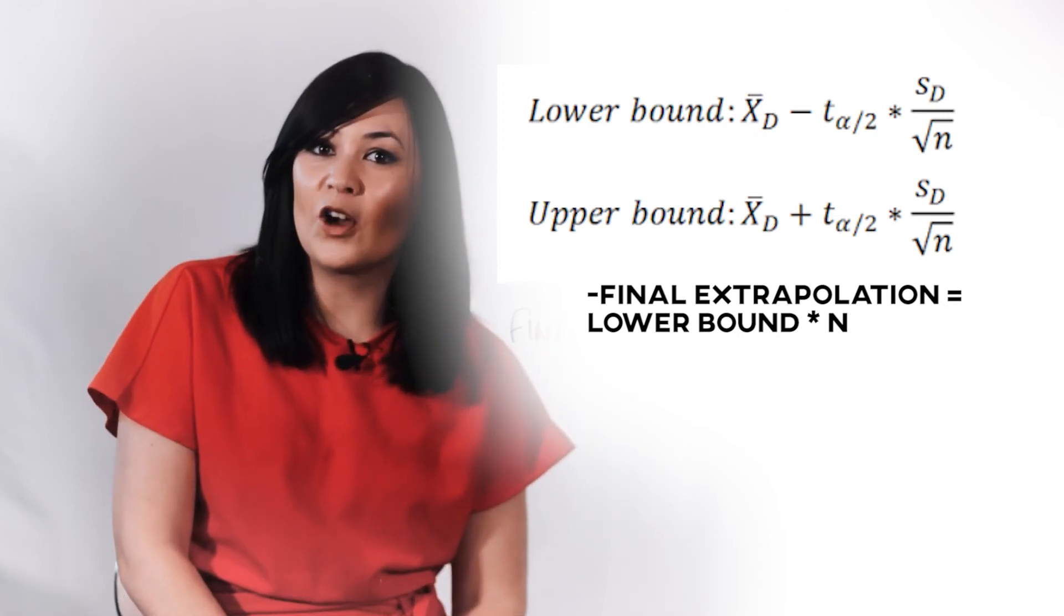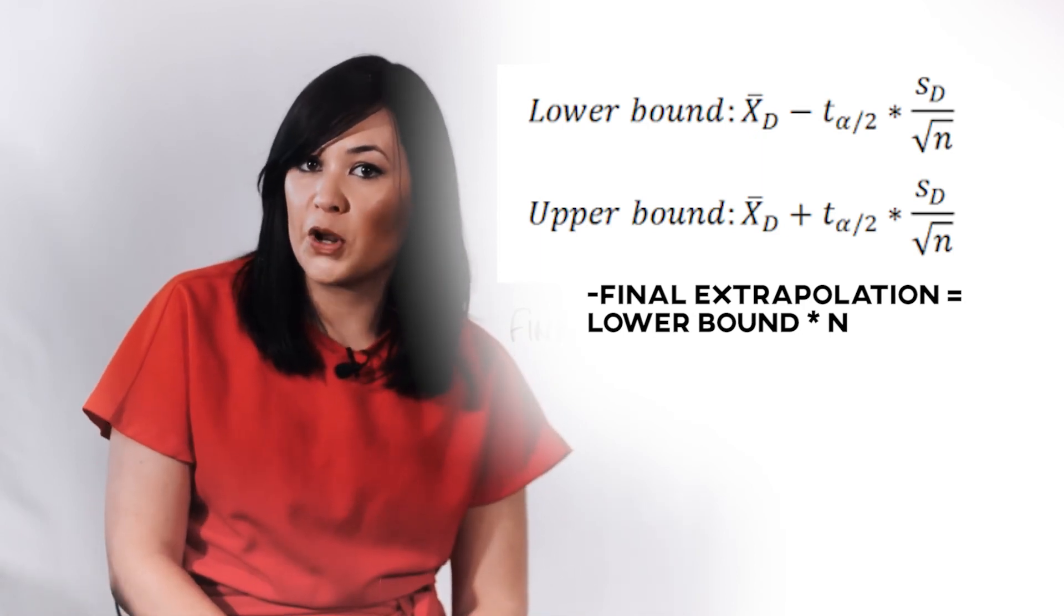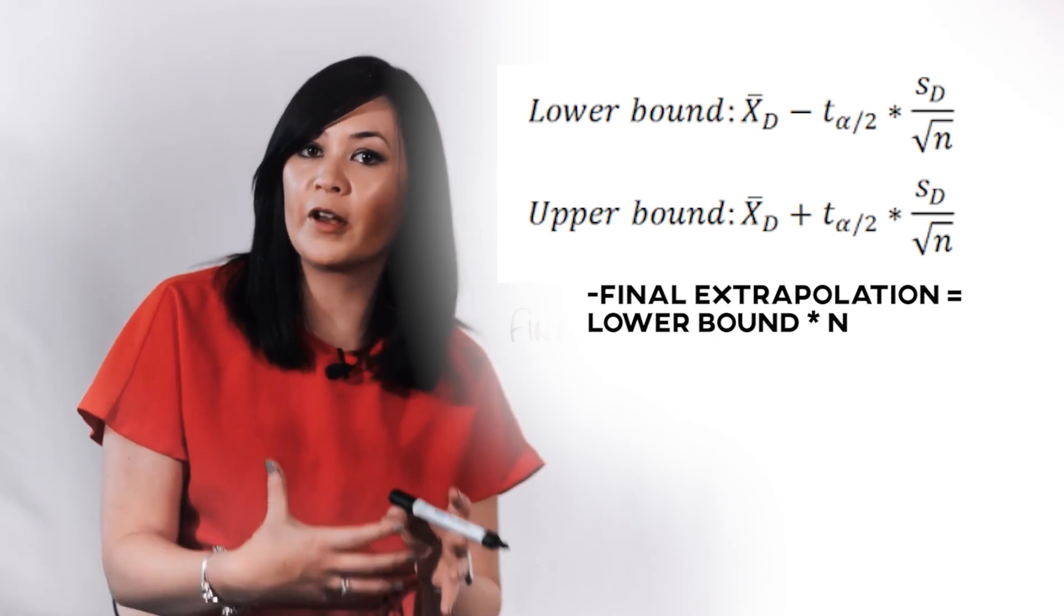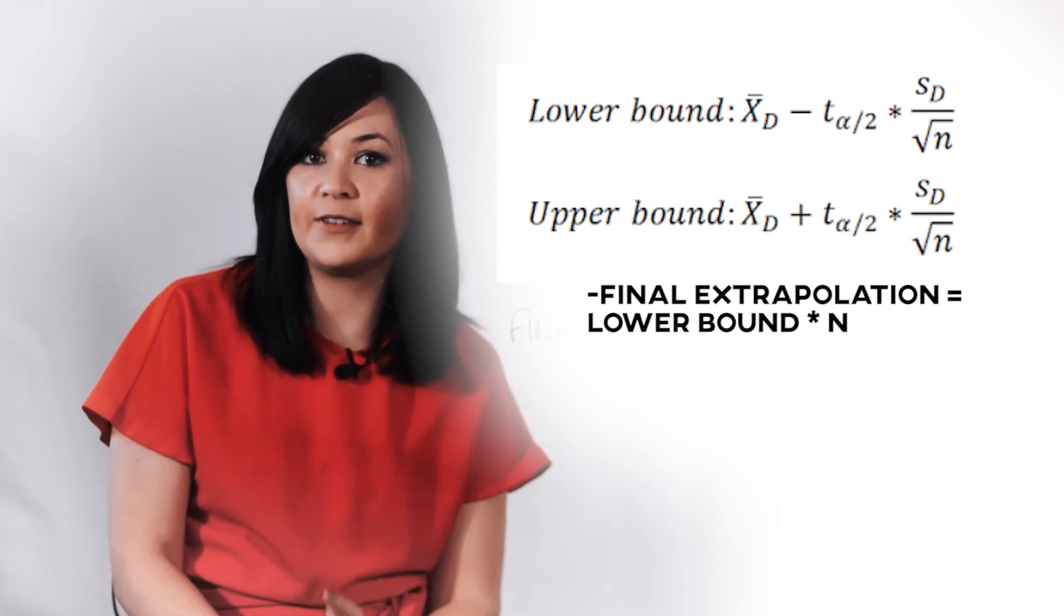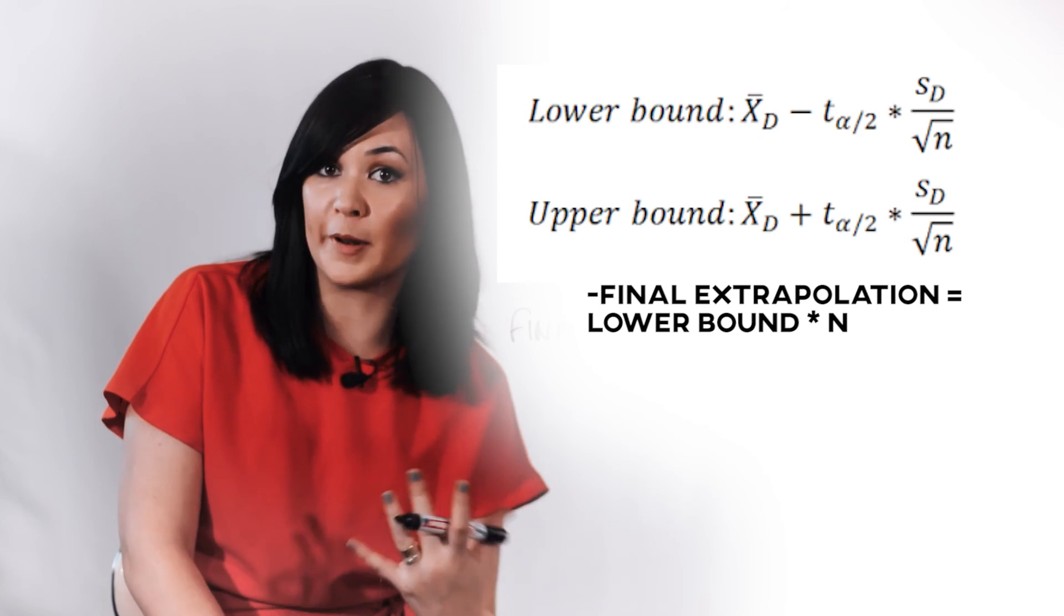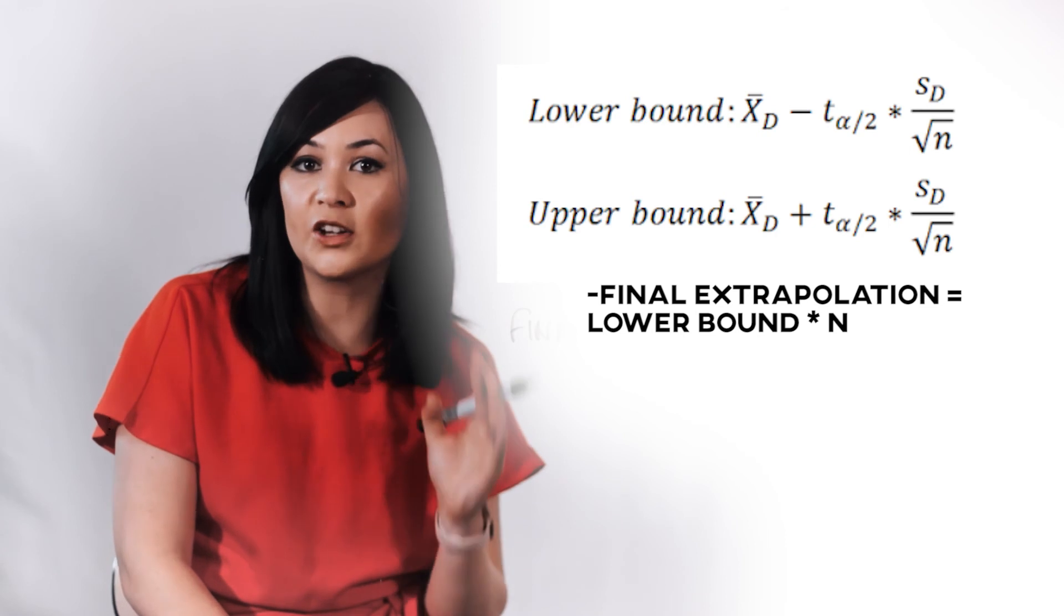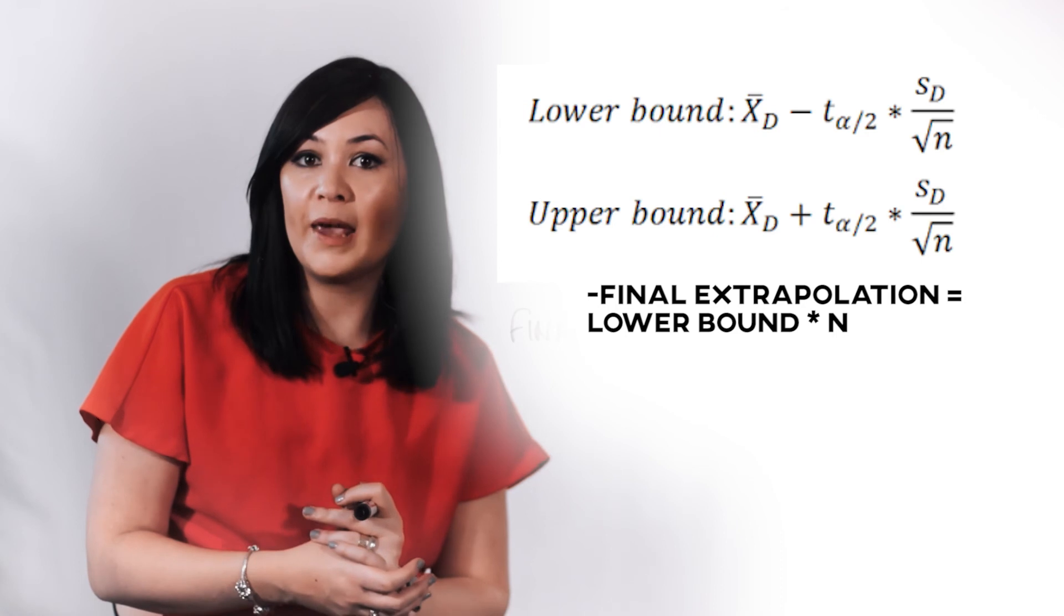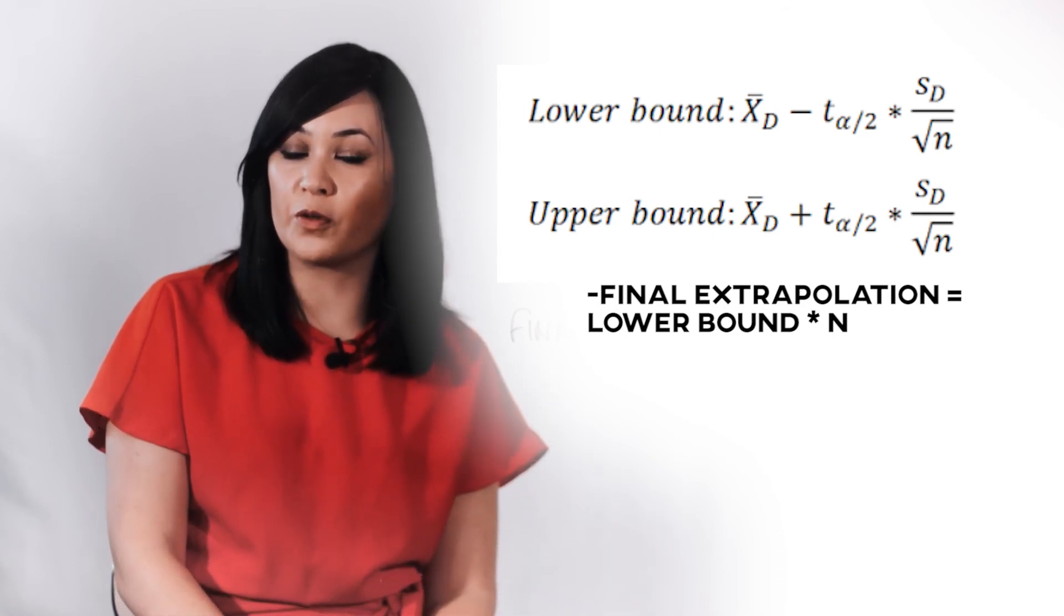This statistical formula also illustrates the importance of setting up the sampling procedure so that to improve your accuracy. The SD term in the confidence interval equation here represents the standard deviation of the sample overpayments. Now, remember my previous example with simple random sampling versus stratified sampling? Generally speaking, the standard deviation will be lower when using stratified sampling if the strata have been defined properly. Now, as you can see from the formula, a lower standard deviation results in a tighter confidence interval. And this will result in a higher lower bound of the interval, meaning that the auditing party will be able to recover a larger portion of the overpayments.